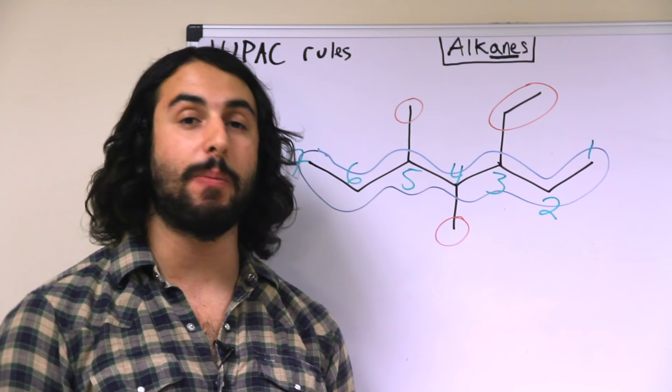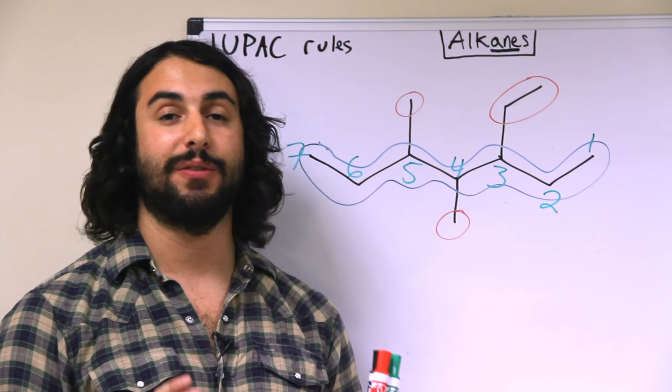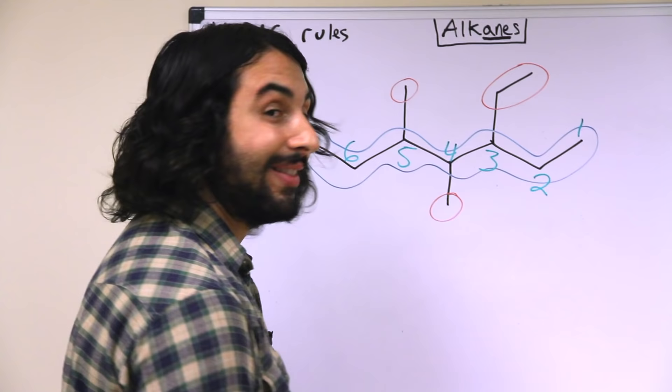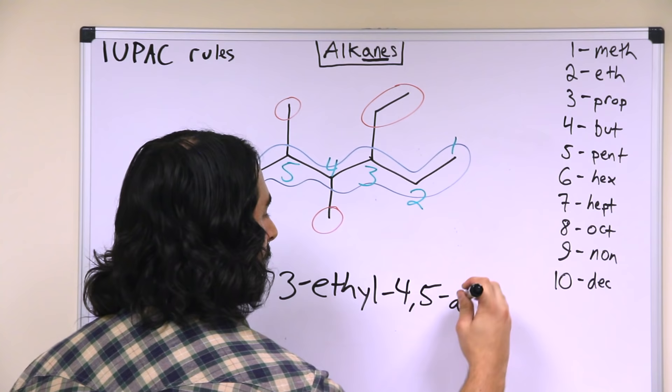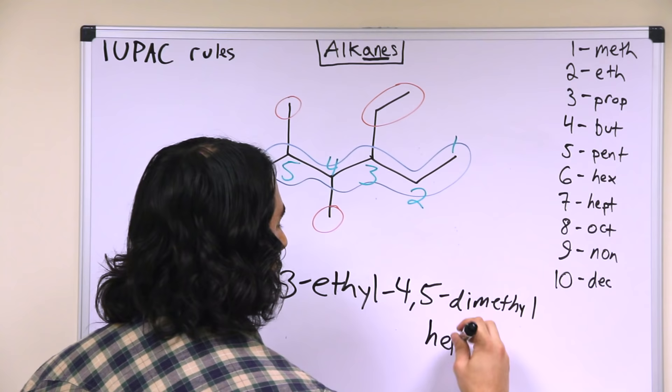But that prefix will not be taken into account for alphabeticity, so ethyl still is before methyl. So we will write that first: we have 3-ethyl, and then we are going to say 4,5-dimethyl-heptane.